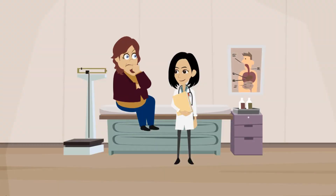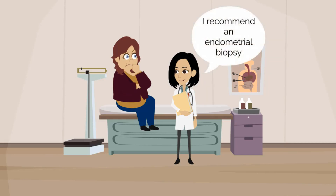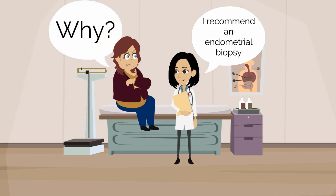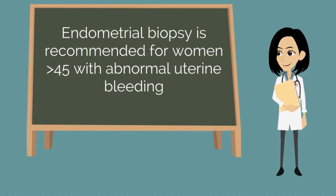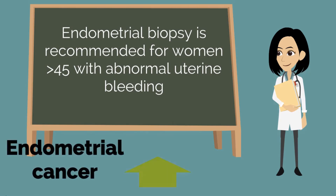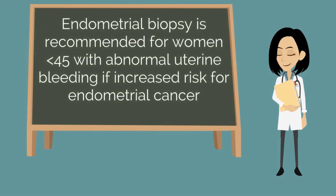Returning to our patient: in addition to labs and ultrasonography, you recommend proceeding with an endometrial biopsy because of her abnormal bleeding. Endometrial biopsy is recommended for women over the age of 45 with abnormal uterine bleeding, as the risk for endometrial cancer increases with age and a biopsy can help diagnose precursors as well as cancer itself. It is also recommended for women younger than 45 with abnormal uterine bleeding if they have increased risk factors for endometrial cancer, such as obesity or chronic anovulation.